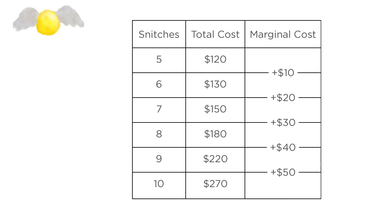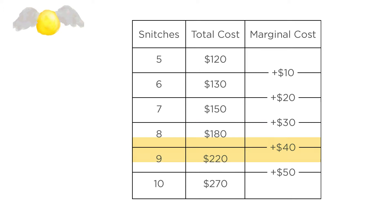Remember that golden snitch factory from earlier? Now let's say that the fixed cost of one machine is $100 rather than $200 from earlier. So it now costs that firm $120 to produce five snitches, $130 to produce six, and so on, as you can see in the table. The marginal cost of each additional snitch is how much the total cost went up as the firm produced that extra snitch.